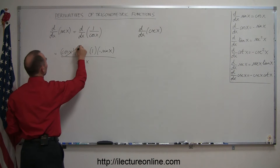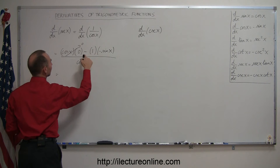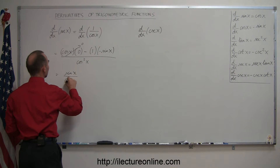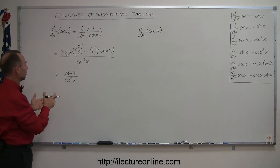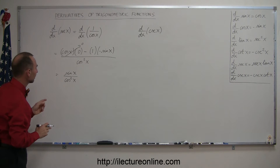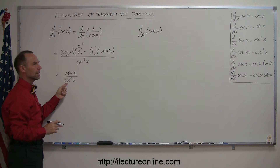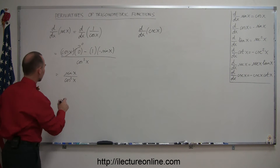Since the first term is zero, we're left with a negative times a negative, which gives us a positive: sine of x divided by cosine squared of x. Now, 1 over the cosine of x equals secant of x, and 1 over cosine squared of x equals secant squared of x.